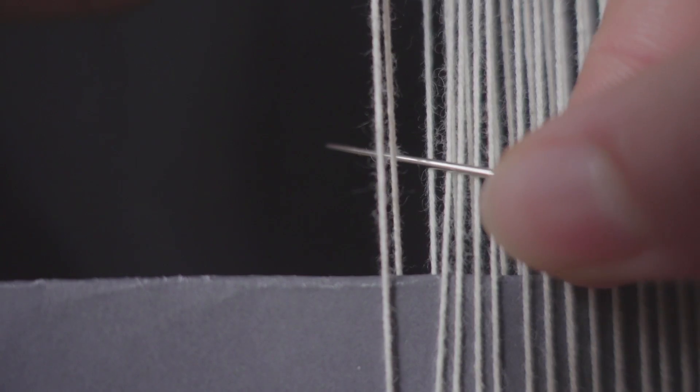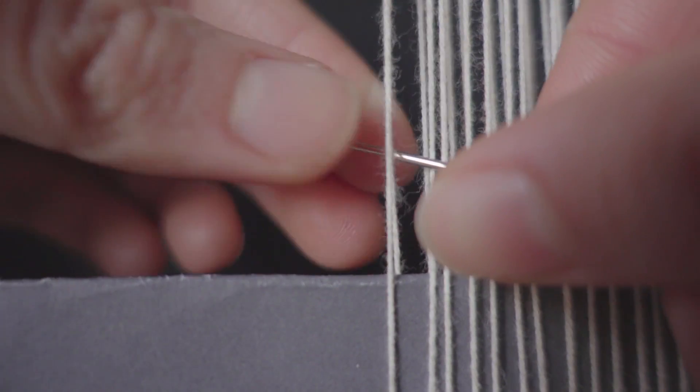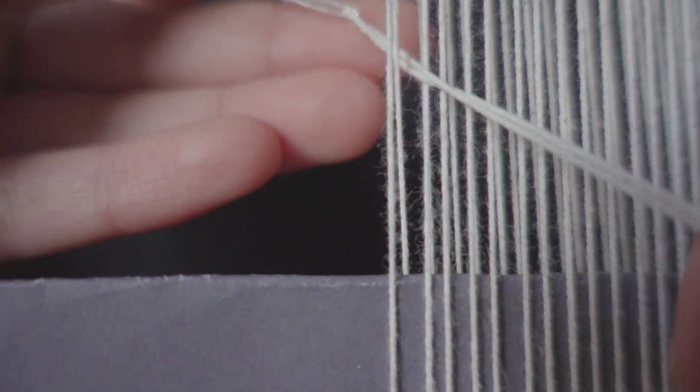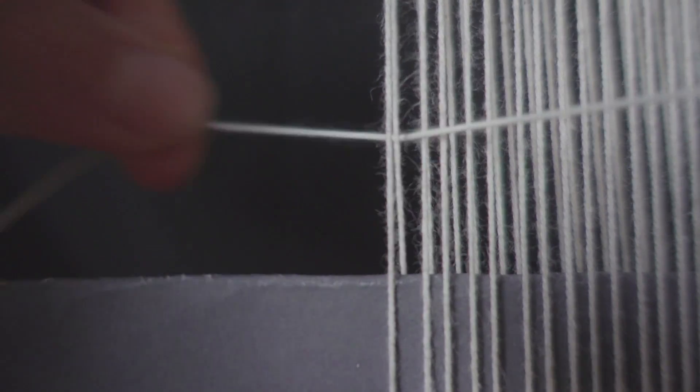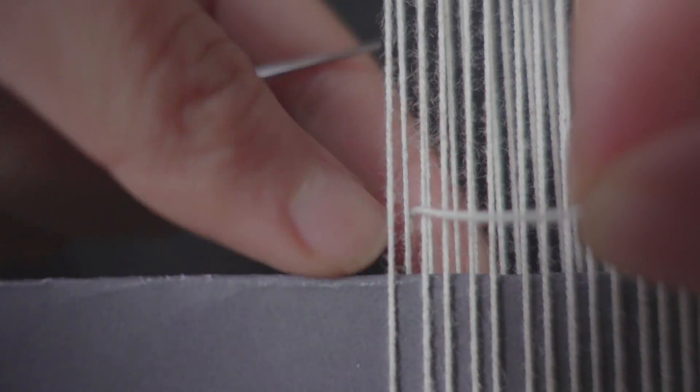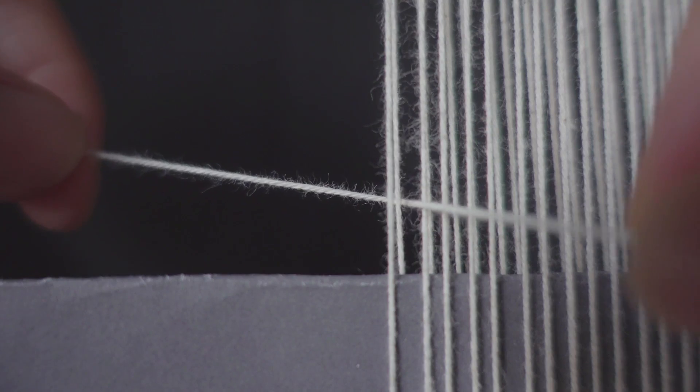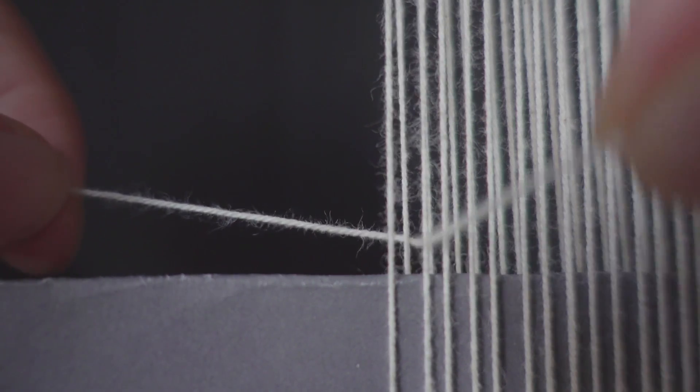Okay, so first we are gonna take two warp threads at a time. The first thing we are going through with the needle from the right side and we will keep the end of the warp thread in the right side here.